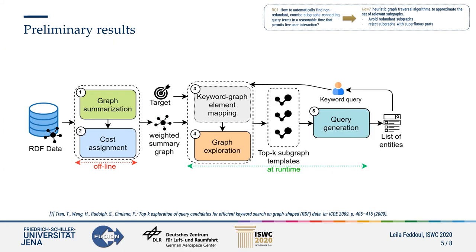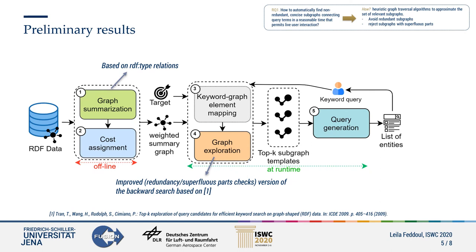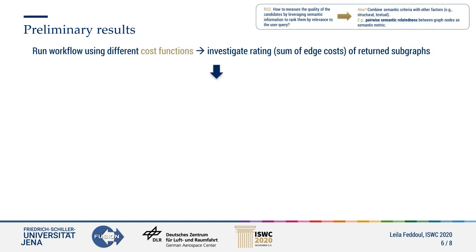To address the previous questions, and especially the first one, we propose the following approach. The workflow is divided into two phases, offline and runtime. The offline phase takes the original RDF graph, summarizes it, then assigns costs to its edges. In the runtime phase, keywords are mapped to graph elements, the graph is explored to find candidate paths, and query results are displayed to the user. To address the second research question, we run our pipeline using different cost functions and investigate how the returned subgraphs are rated.